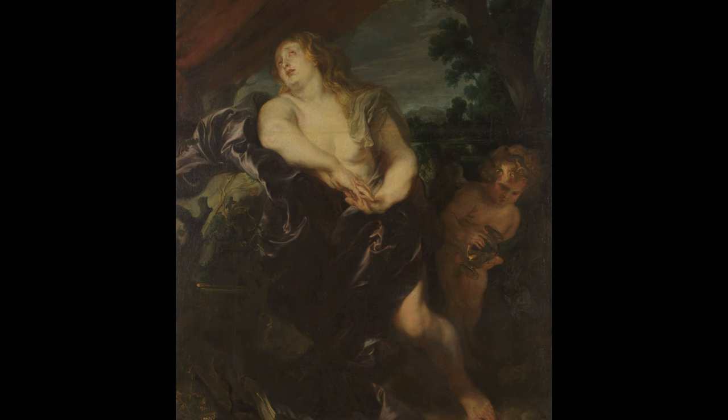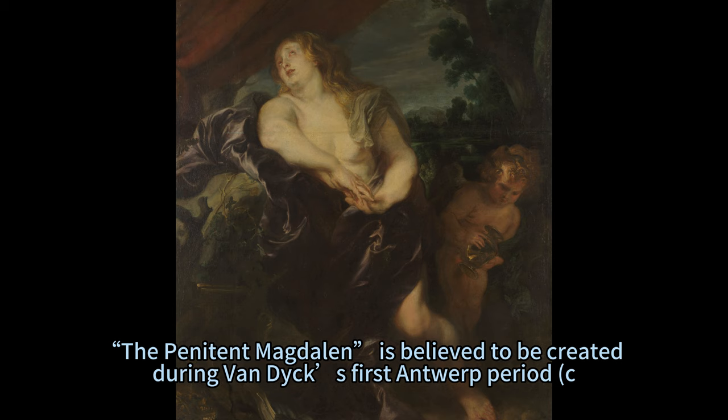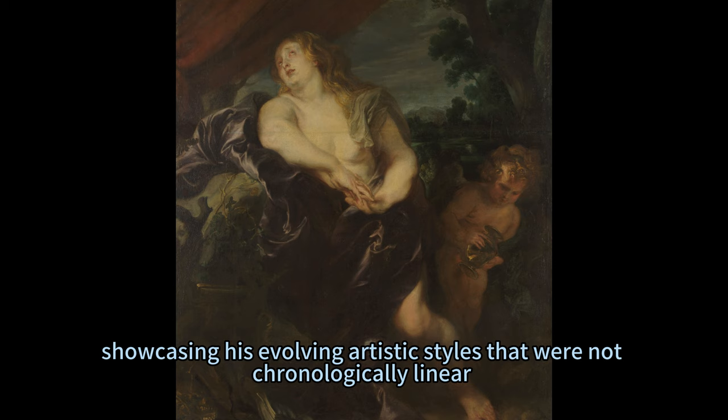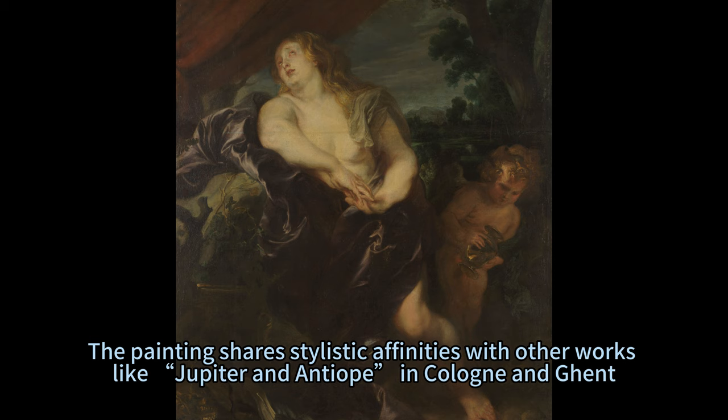The Penitent Magdalene is believed to have been created during Van Dyke's first Antwerp period (c. 1613–20), showcasing his evolving artistic styles that were not chronologically linear but rather simultaneous expressions of his creative genius. The painting shares stylistic affinities with other works like Jupiter and Anchises in Cologne and Ghent.